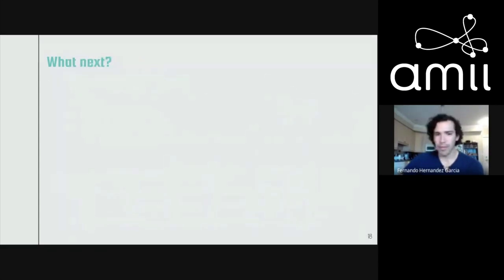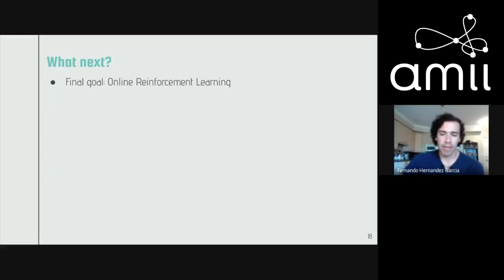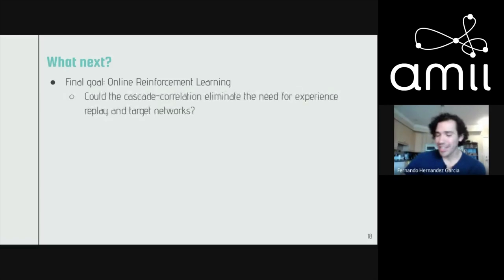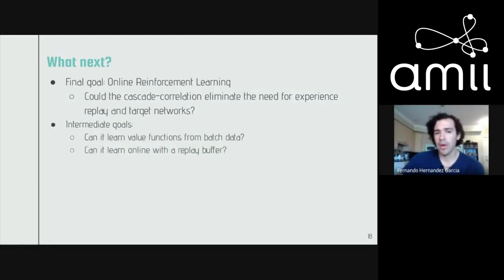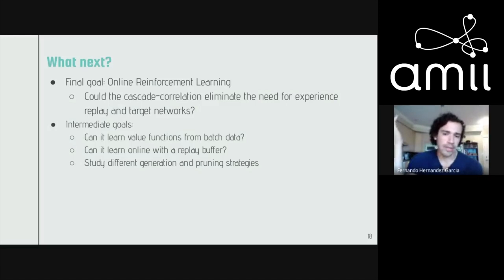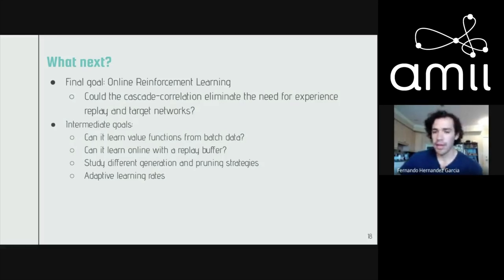This is all very preliminary and I'm mostly looking for feedback. What I want to do next is use cascade correlation for online reinforcement learning — specifically whether it could help eliminate the need for experience replay and target networks in deep RL. As intermediate goals, I want to see how well it learns value functions from batch data, study different generation and pruning strategies, and try adaptive learning rate methods to eliminate more hyperparameters from the architecture.